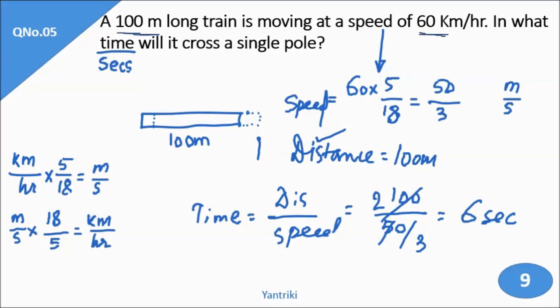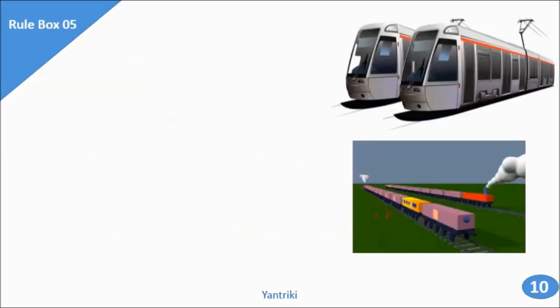That gives us 6 seconds. So within 6 seconds, a 100-meter long train moving at 60 km per hour will cross a single pole. In place of a pole, they can place a man standing, or anything — if seen from the top view it's just a point or a mark. In this case, the length of the train is the distance.